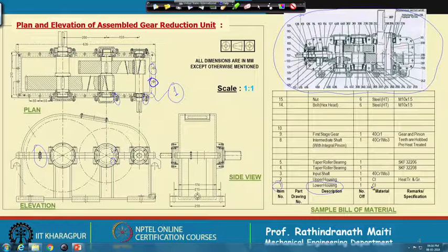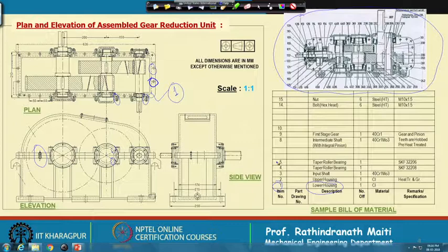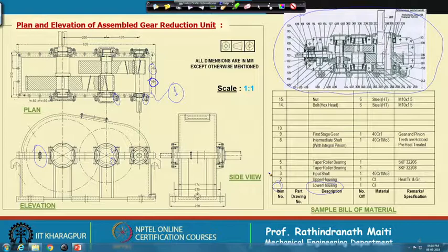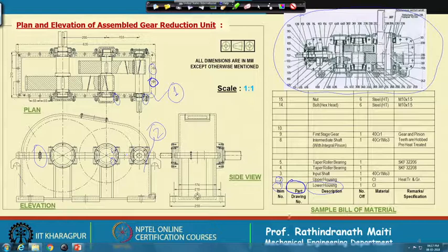We have to make such columns: item number, then the part drawing number — all detail drawings will have a separate part number. Sometimes it is written there which component it will be assembled to. For housing, many components will come over it and you may not always need to note that. But the part drawing number must be mentioned in the bill of material, along with the description. Number 1 is the lower housing and number 2 is the upper housing.